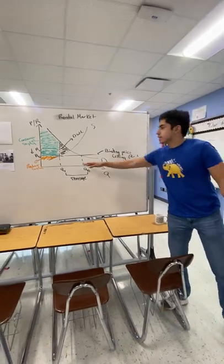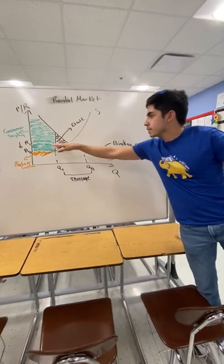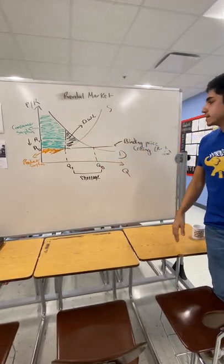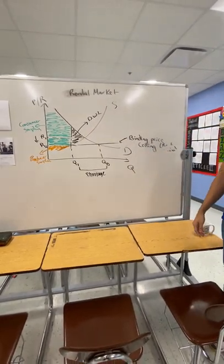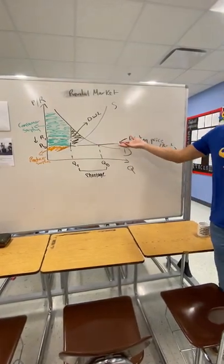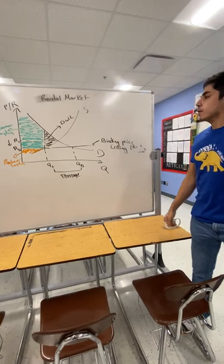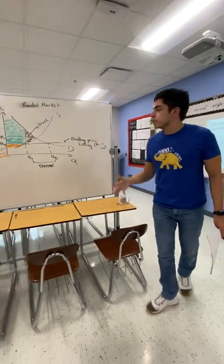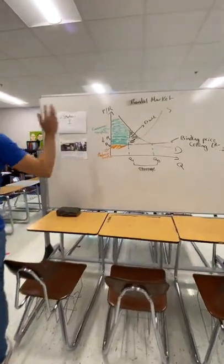We can see that consumer surplus in equilibrium — if we didn't intervene in this market — could be smaller than the newfound consumer surplus with the binding price ceiling. For sure, there are going to be people that acquire rental units who will see their social welfare increase at the expense of producer surplus. We also have to think of the tradeoffs: we get deadweight loss and a gap between quantity supplied and quantity demanded. I'll include links in the description of this YouTube video that go over consumer and producer surplus and deadweight loss.